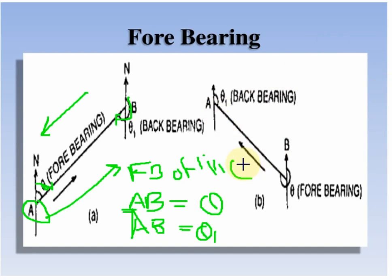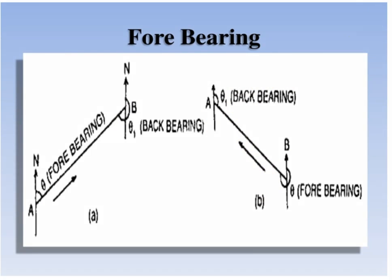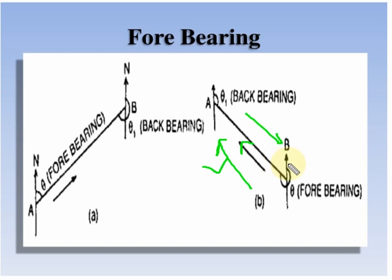If the direction of the survey is from B to A, then the fore bearing is measured from B to A. So the fore bearing of BA is measured from north to the survey line. The back bearing of the same line BA is theta 1, measured from north to that survey line. So in the direction of the survey it is called fore bearing, and in the opposite direction it is called back bearing.